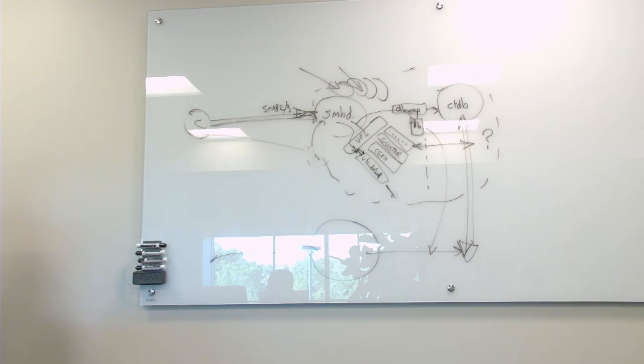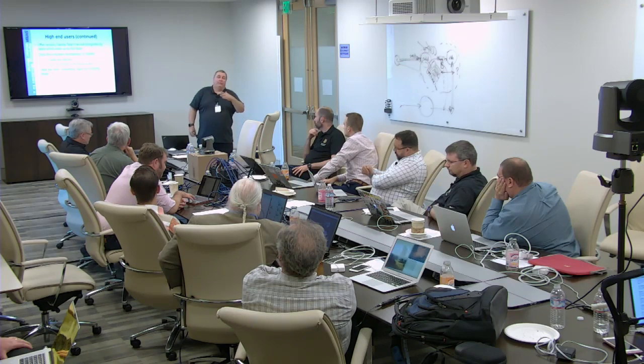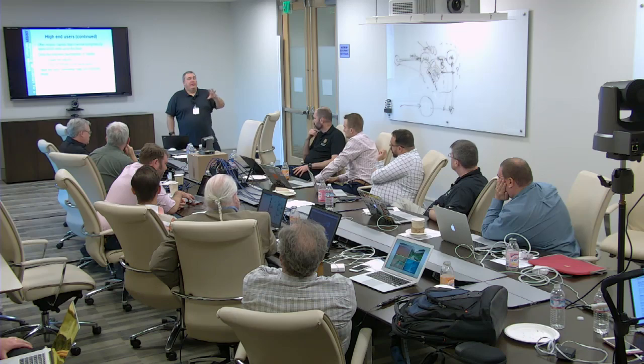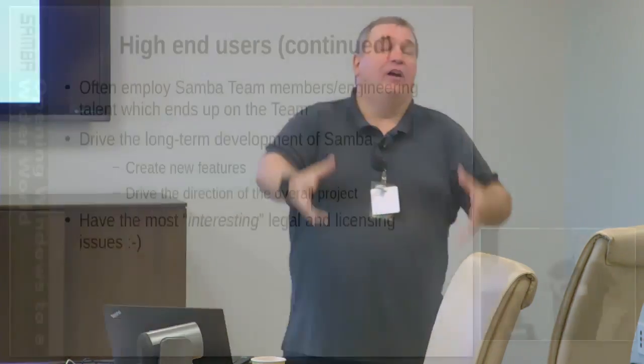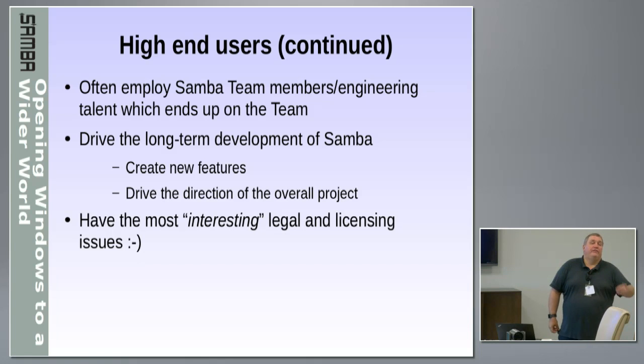So this is where you get your high-end users — cloud gateways, clustered object storage gateways, high-end NAS, people running Active Directory domains. Those are the people who employ Samba team members, and they have the most interesting legal and licensing issues. We have lawyers available, and often I'll sit down and a lot of the time people just want to say, hey, if we design it like this, are you going to sue us? And the answer is always no. It's nice to explain to them that no, we're not litigious — we want you to use it. We've actually made changes to the VFS for vendors so that it makes it easier to use with their proprietary products.